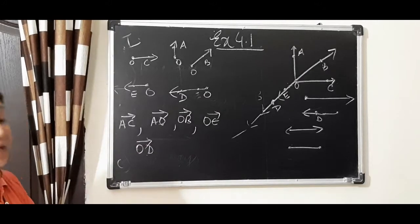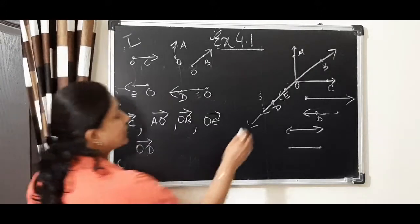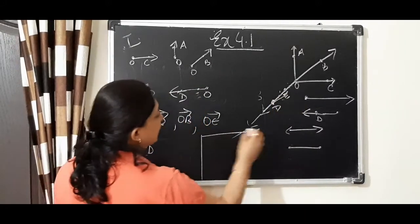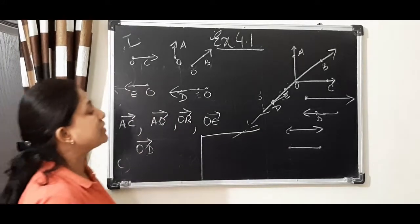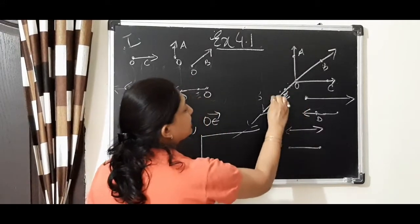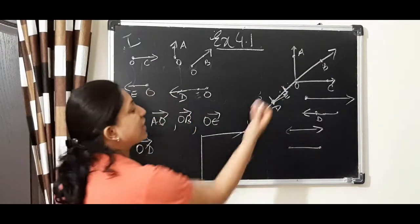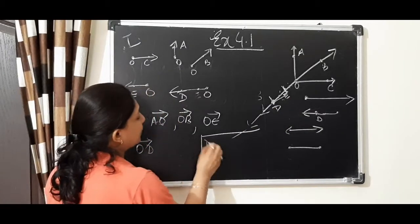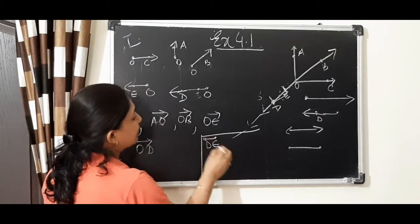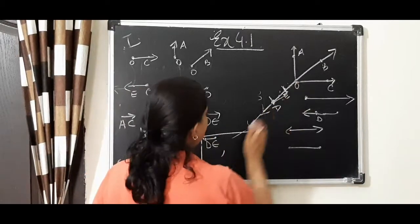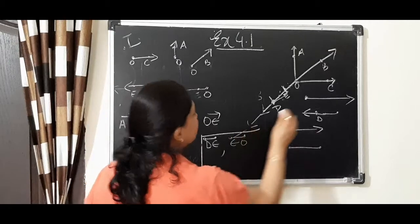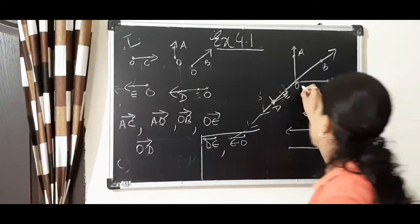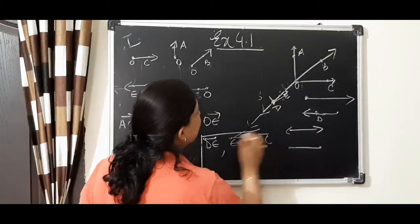Then you have five line segments. A line segment has a definite length. Take D, E - it starts from here and ends here, or you can say E, D starting from E and finishing at D. So we have DE. Then E, O - it is starting from O and here also you have a point, so it is a line segment. Same way we have OC as a line segment.